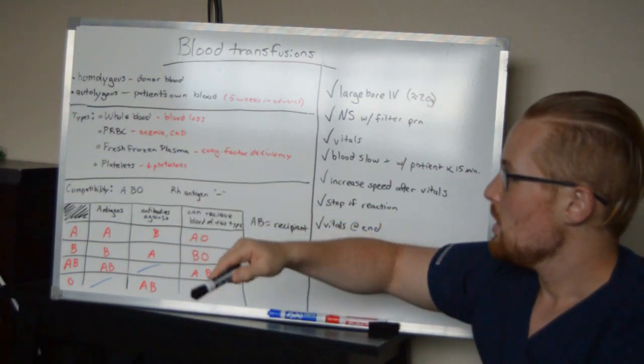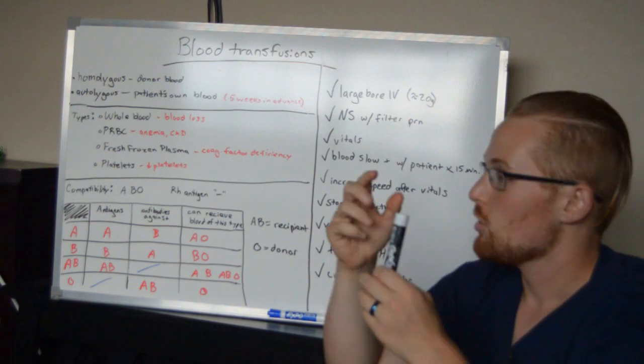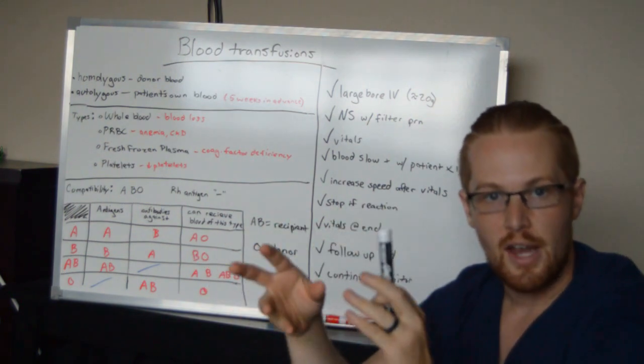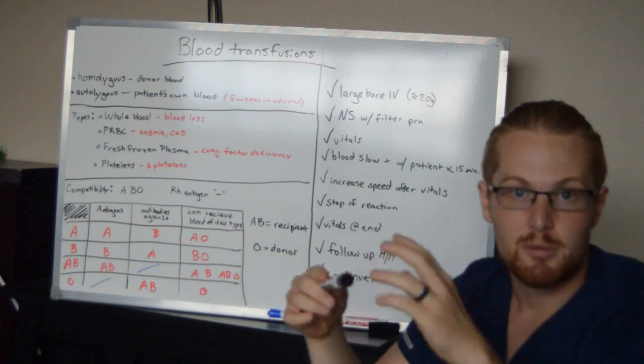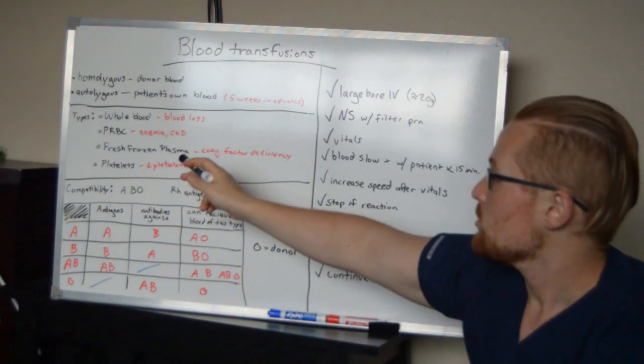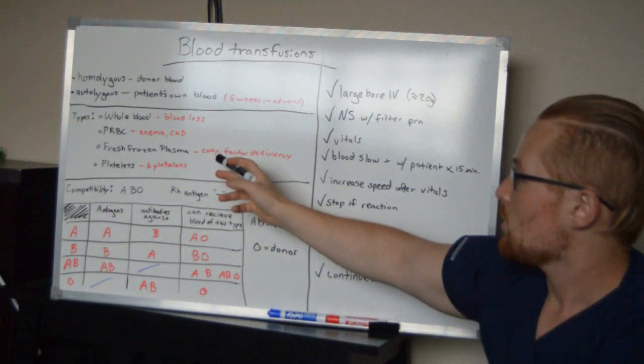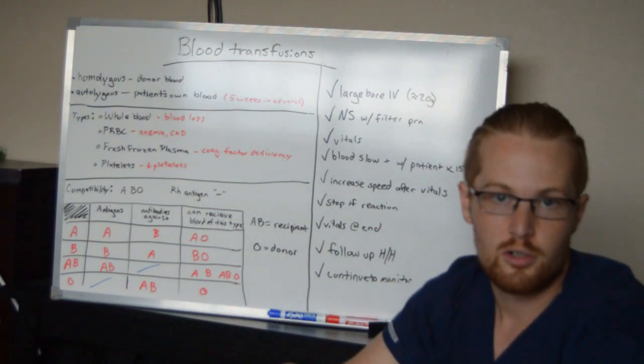Fresh frozen plasma. Plasma is the other part of the blood that has coagulation factors, and not necessarily always platelets, but just the other factors. And so this would be good for patients having deficiencies with their coagulation factors, like hemophilia.